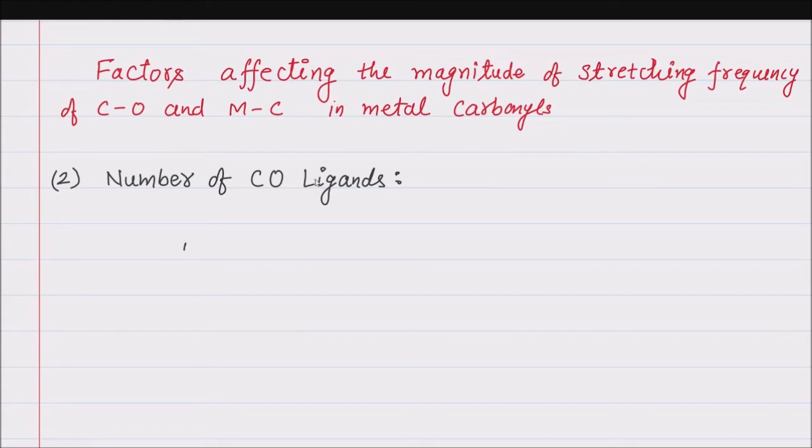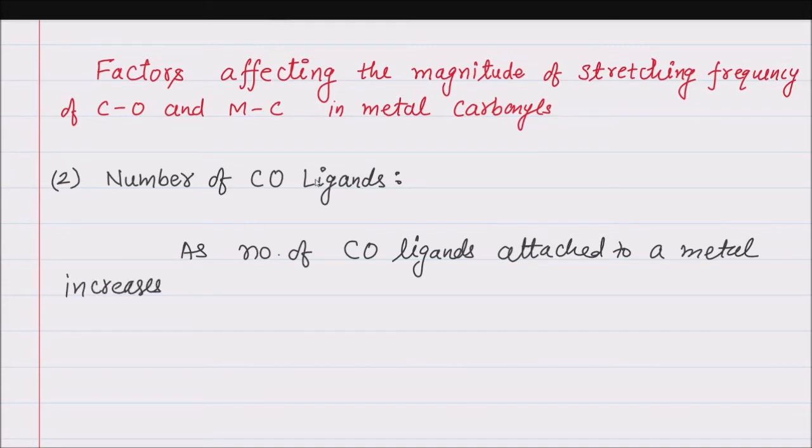You know as the number of CO groups increases, means as a number of CO ligands attached to metal increases, CO first donate the electrons to the metal. So as the number of CO ligands attached to the metal increases, the formal negative charge on metal increases. The formal negative charge on metal increases.